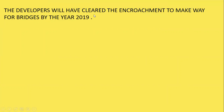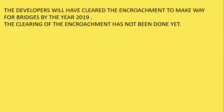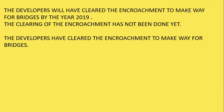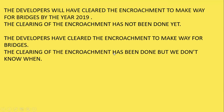'The developers will have cleared the encroachment to make way for bridges by the year 2019.' The clearing of the encroachment has not been done yet — that's the meaning of 'will have cleared,' which is future perfect tense. Versus: 'The developers have cleared the encroachment to make way for bridges' — present perfect tense — meaning the clearing has been done but we don't know when, since in present perfect tense it's not mandatory to give a specific time.